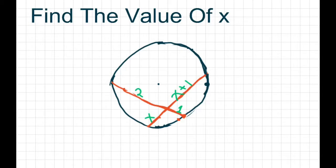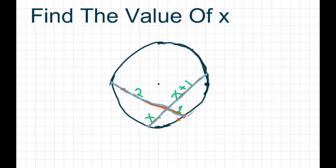Hi everyone. We're going to find the value of X here with these two chords inside of a circle. With the chords, we know that the length of this chord should equal the length of this chord here. So what we're going to do is take our 2 times 1, and set it equal to X times X plus 1.